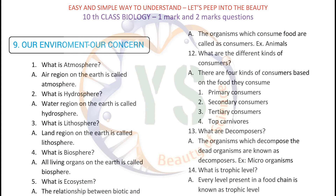What is atmosphere? The air region on the earth is called atmosphere. What is hydrosphere? The water region on the earth is called hydrosphere. What is lithosphere? The land region on the earth is called lithosphere. What is biosphere? All living organisms on earth are called biosphere.